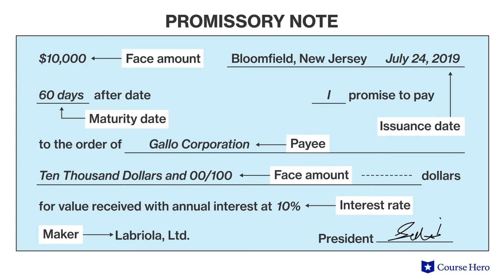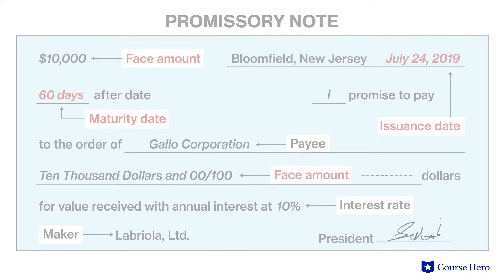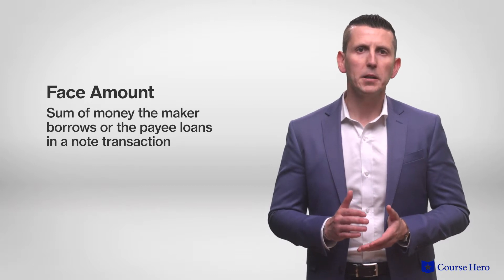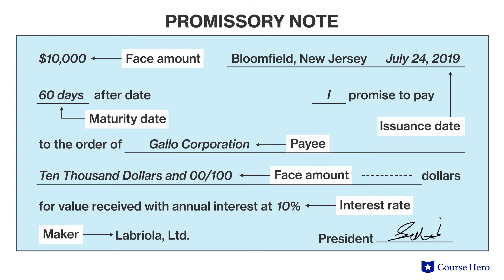The promissory note contains several other elements — for example, the face amount, the maturity, and the term. The face amount or principal amount is the sum of money the maker borrows or the payee loans. Because notes receivable are typically interest bearing, the promissory note also includes an annual interest rate, which is used to compute interest earned on the face amount through the maturity date of the note.